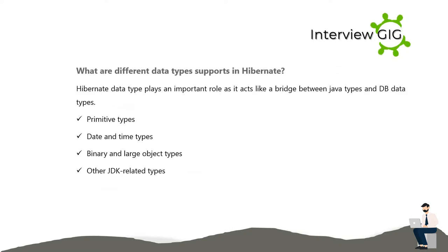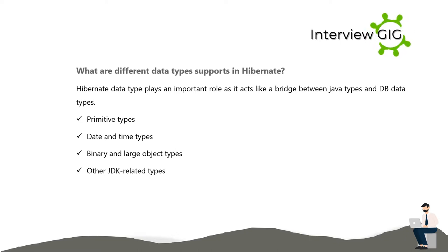What are the different data types supported in Hibernate? Hibernate data types play an important role as they act like a bridge between Java types and DB data types: primitive types, date and time types, binary and large object types, and other JDK-related types.